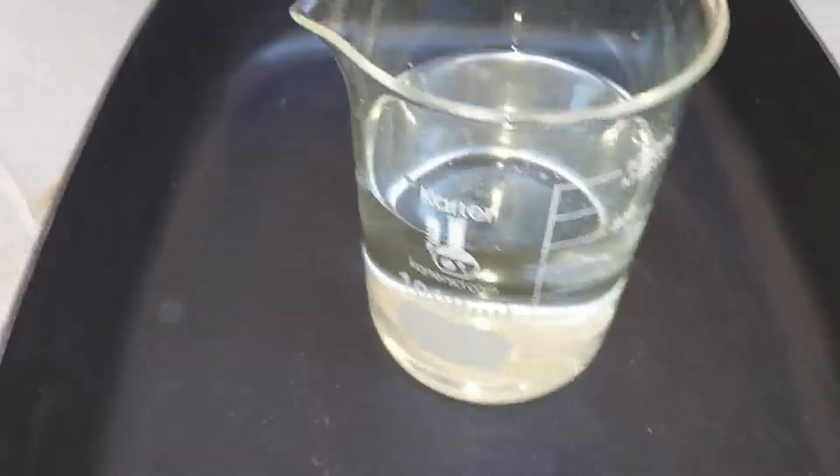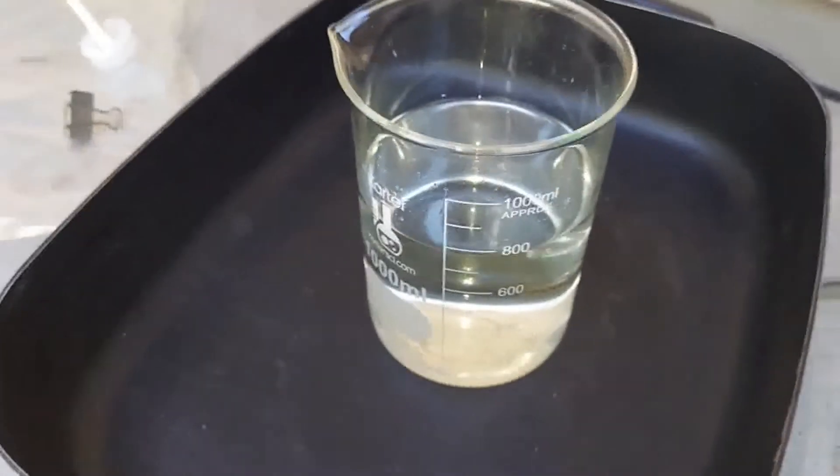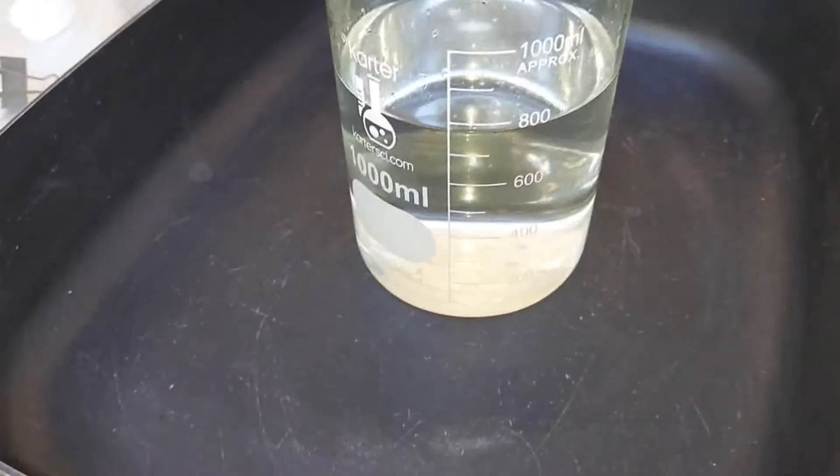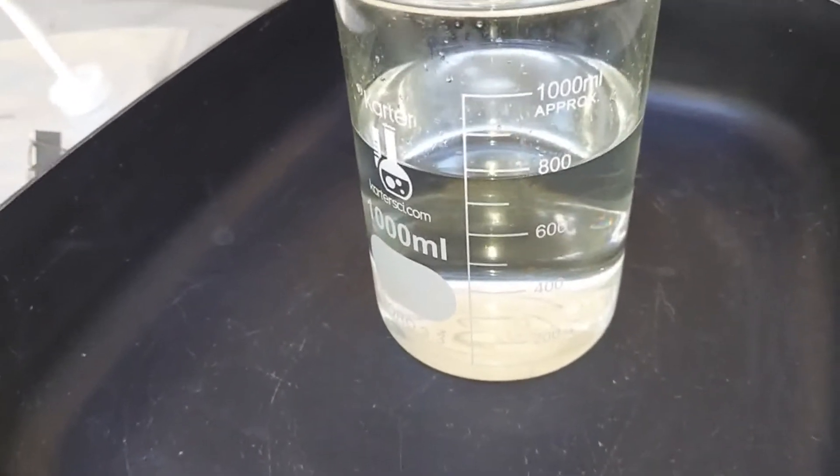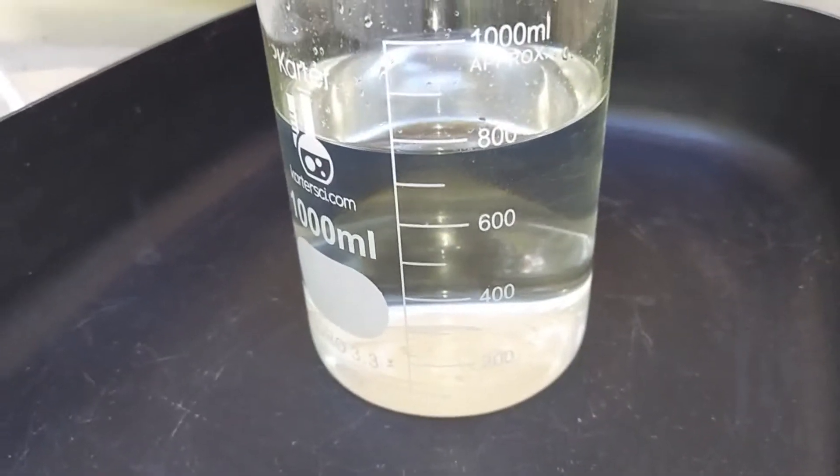This is sulfuric acid from an auto supply place for car batteries. It's about 30% sulfuric acid. I'm going to boil it down and it usually ends up being about half to just a little less than half of what I start with. So it's at 800 milliliters there, so it'll be around 400, just below it maybe. We'll just keep monitoring this.